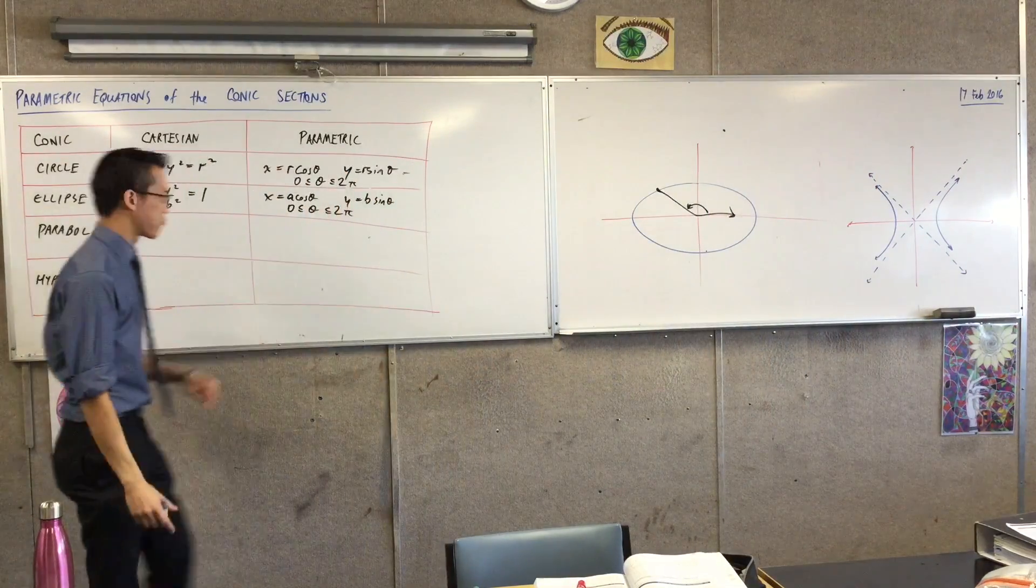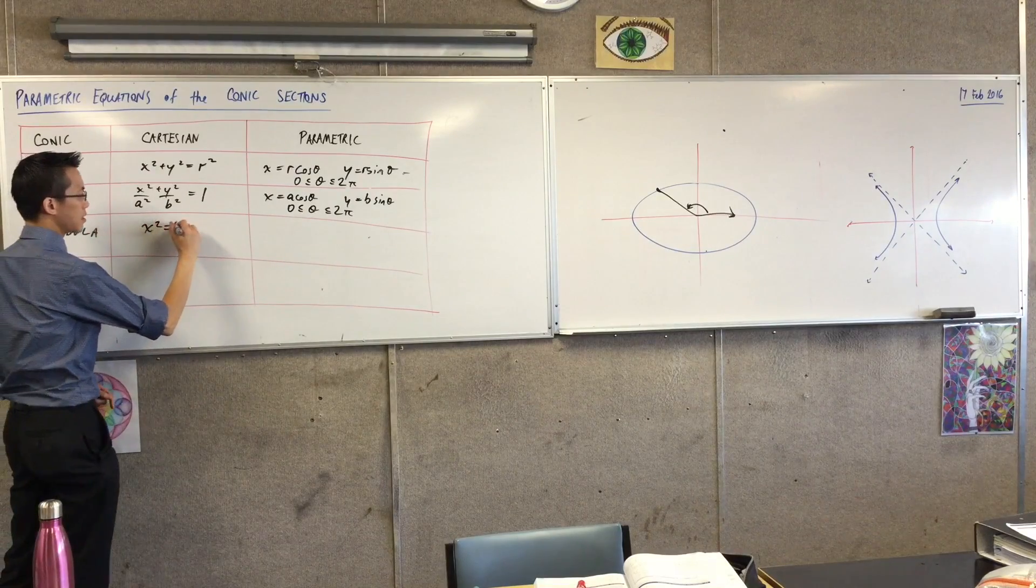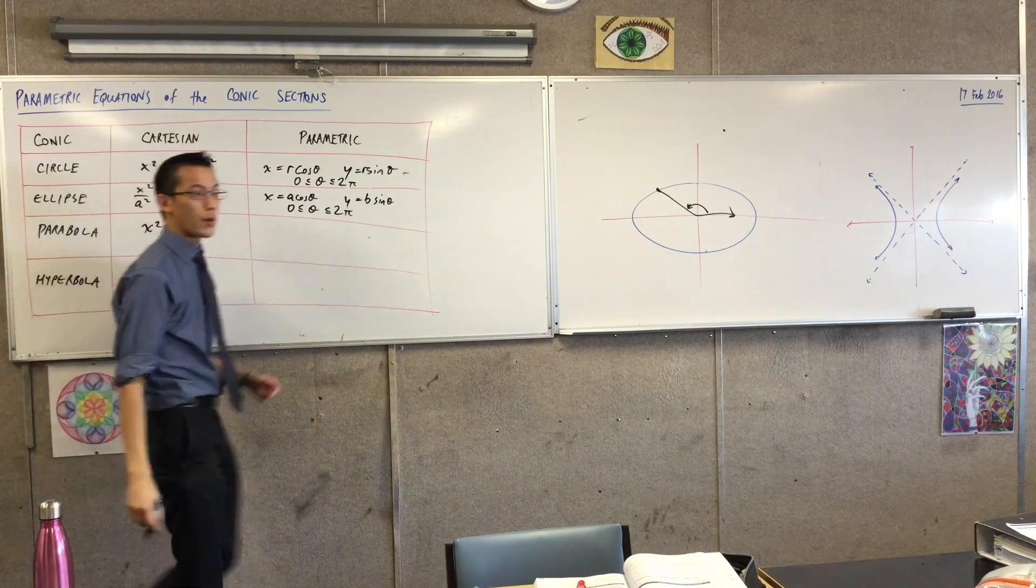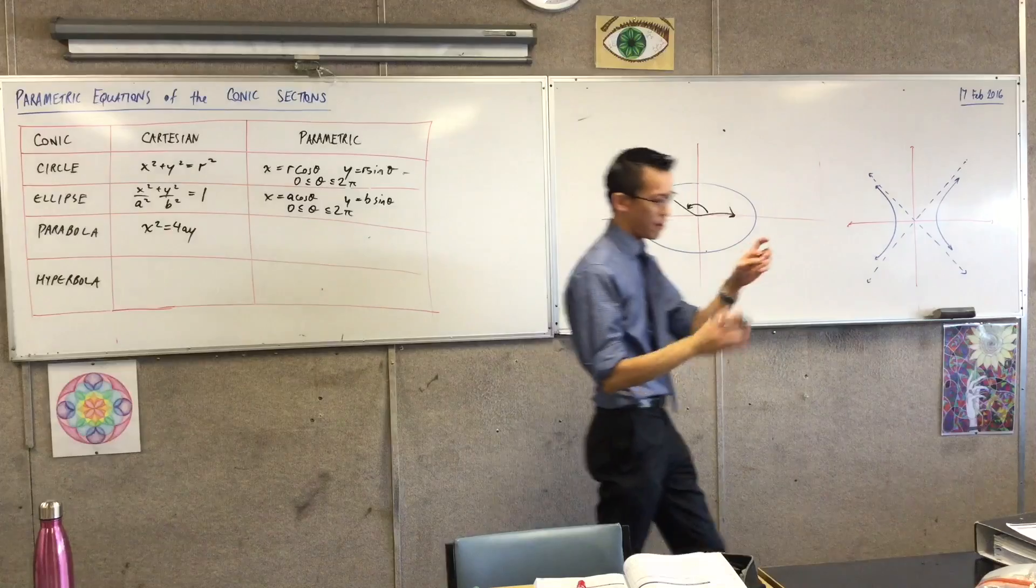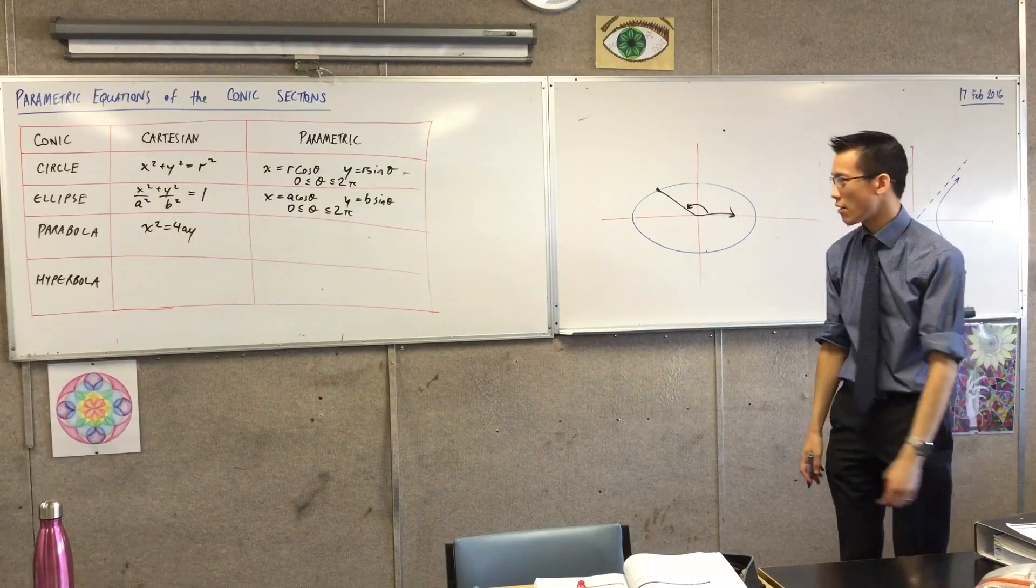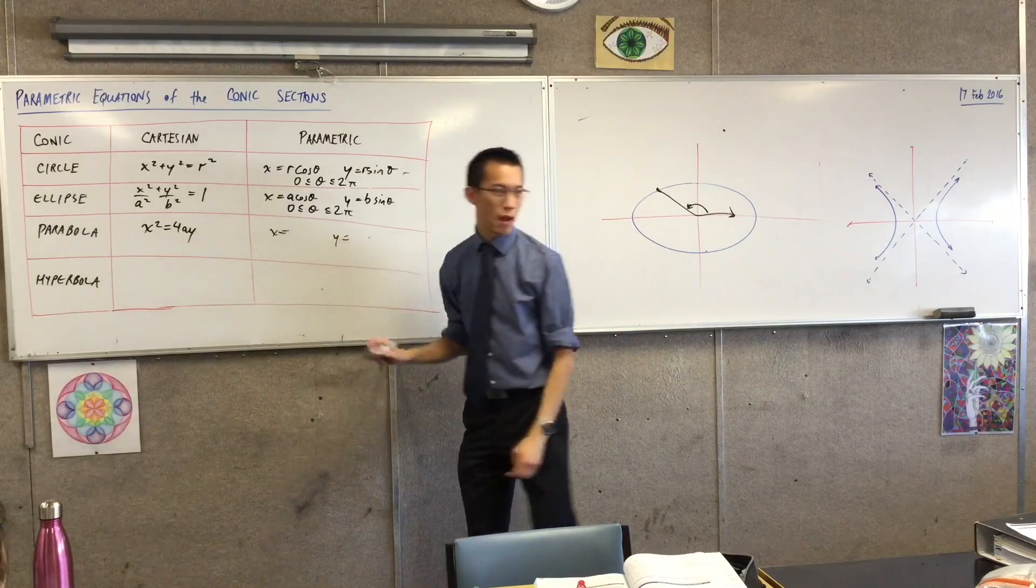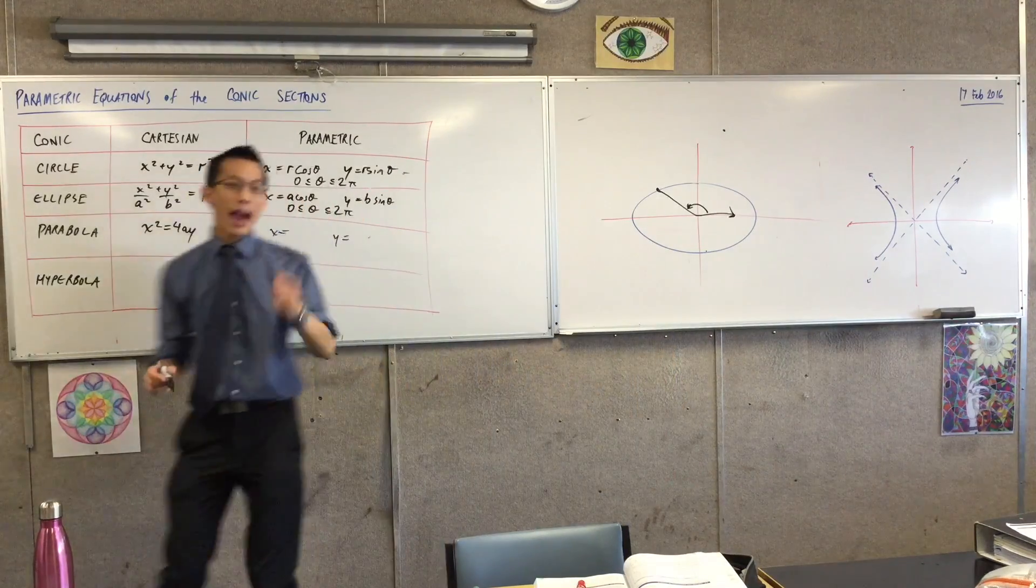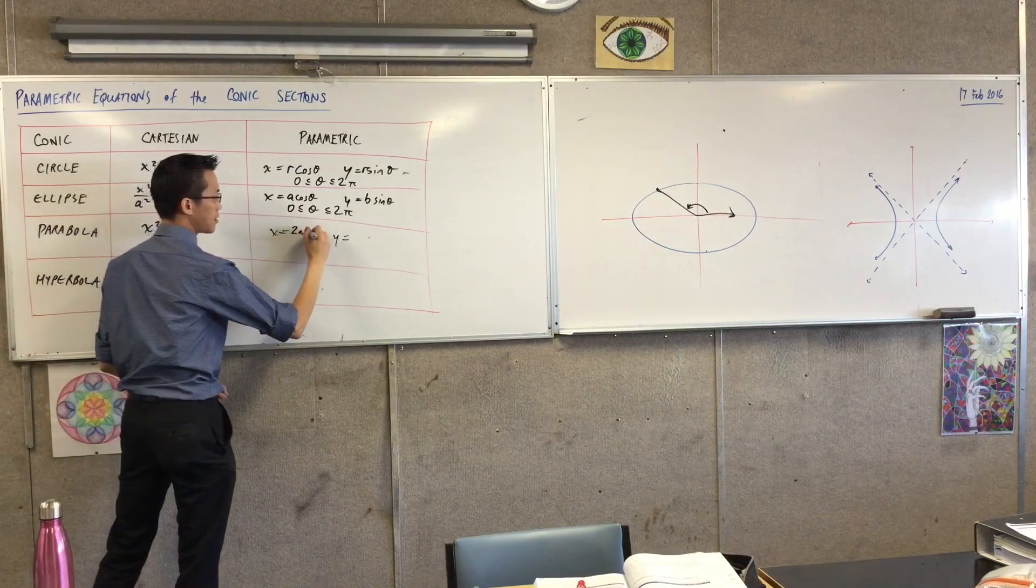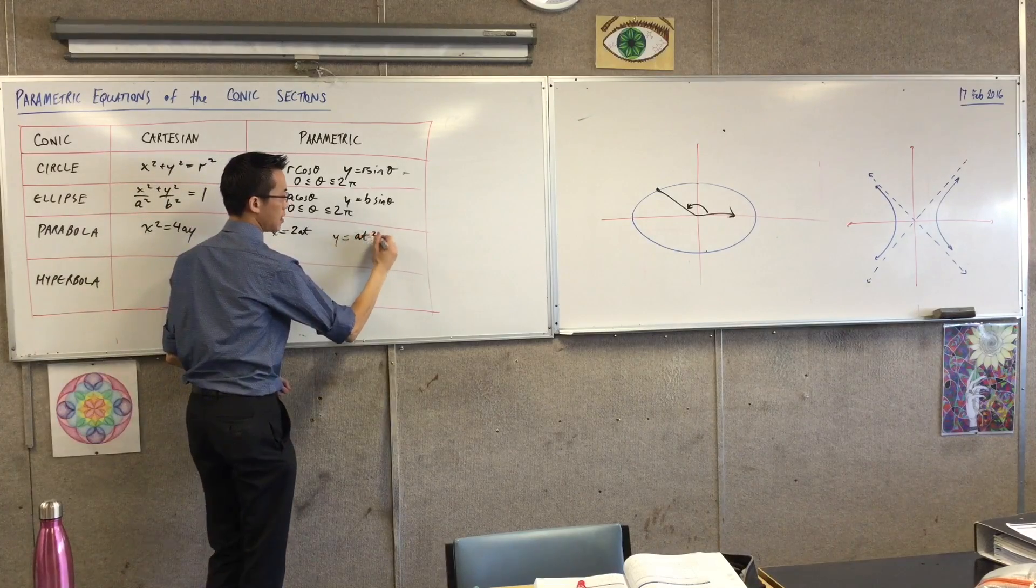Now the parabola, we dealt with the parabola a while ago. So this is the form that we would generally use to make the parametric forms nice and neat. Who remembers what our x and our y are? 2 a t, a t squared. Very good. 2 a t, a t squared.